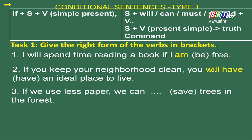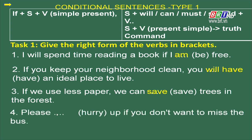Sentence 3: If we use less paper, we can (save) trees in the forest. Câu này đã có động từ khiếm khuyết can rồi, vậy chúng ta chỉ cần động từ ở hình thức nguyên mẫu — đáp án là save. Sentence 4: Động từ hurry cần chia — các em rất dễ nhận ra đây là một lời yêu cầu, do đó chúng ta dùng động từ nguyên mẫu hurry.